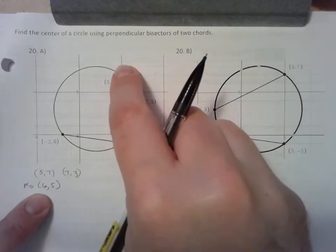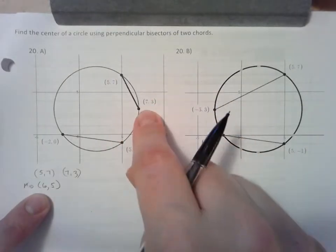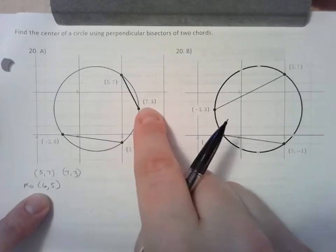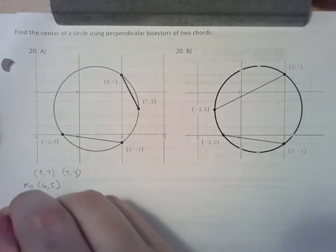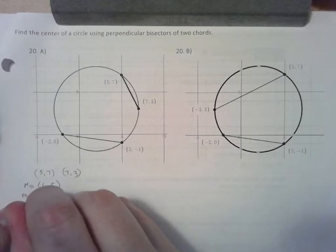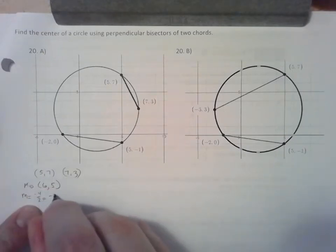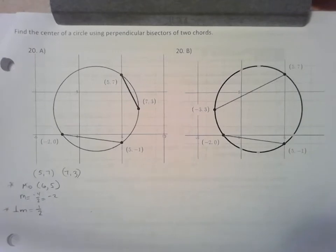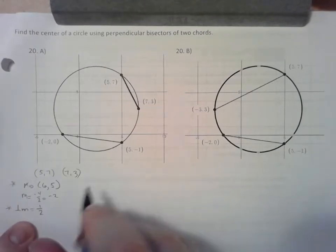Then, it has to be perpendicular to this line. If this line goes down 4 units and right 2, down 4, right 2, it has a slope of negative 2. Its perpendicular slope would be the opposite reciprocal of positive 1 half. I'm going to use the midpoint and the new slope to write the equation for a line. I'm going to write it in slope-intercept form.